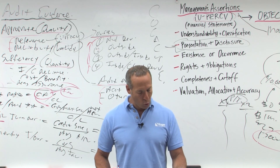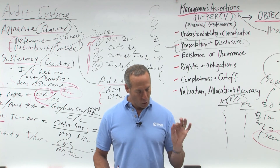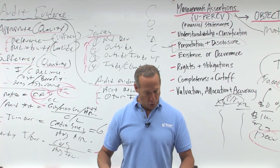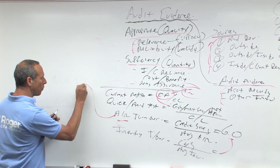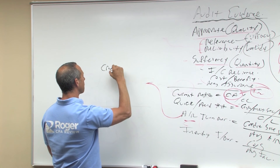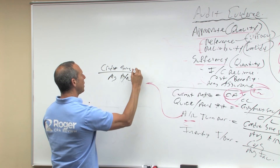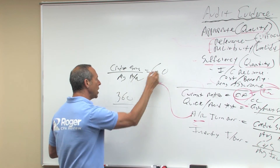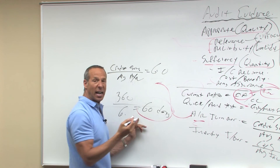Number of days supply in average inventory is calculated as 360 over inventory turnover. So if our AR turnover — credit sales over average AR — equals 6.0, that tells us receivables turn over 6 times a year, or 360 divided by 6 equals 60 days. It tells us they turn over about every 60 days.